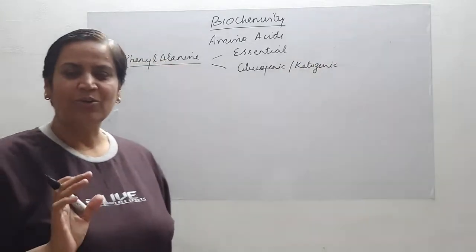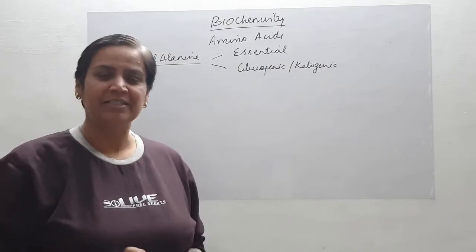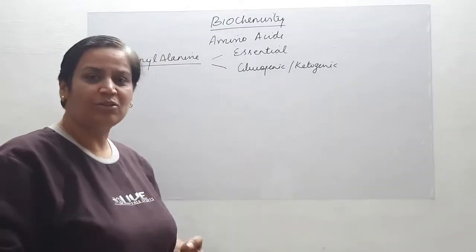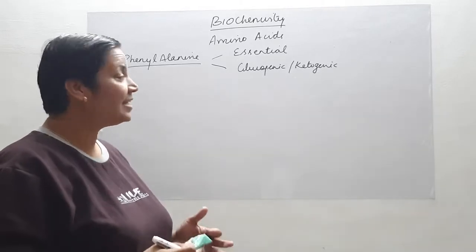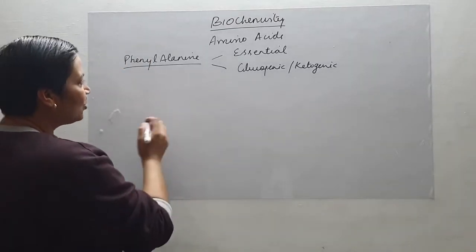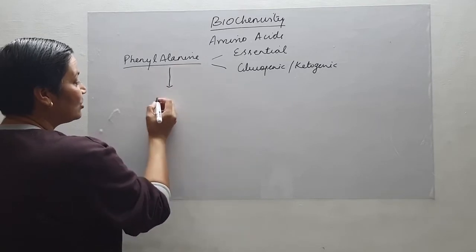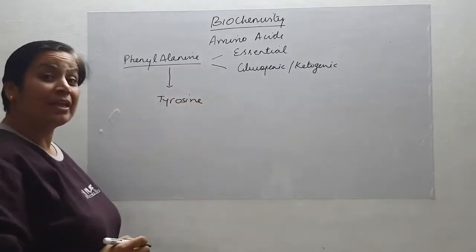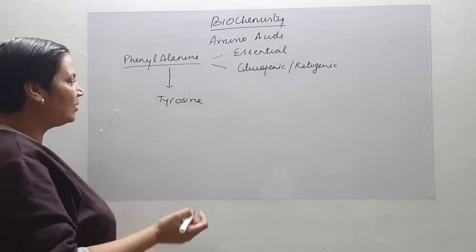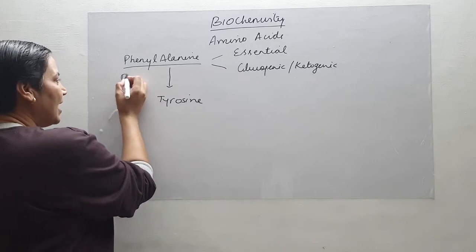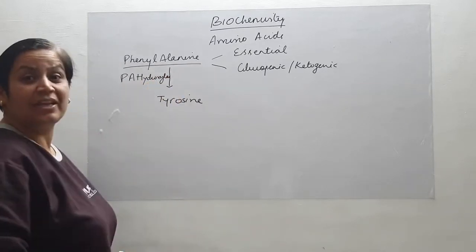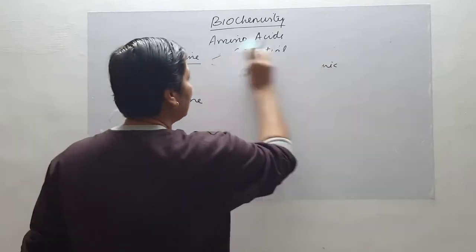We are going to study the catabolism under two subheadings. Once the function of phenylalanine is over, it is degraded to form certain byproducts required by the body; second, it is converted to form certain specialized products. First, phenylalanine will be converted into tyrosine. The only structural difference between phenylalanine and tyrosine is the hydroxyl group, so the enzyme is phenylalanine hydroxylase.